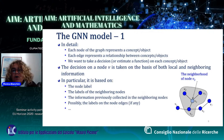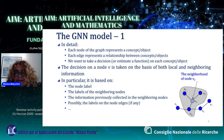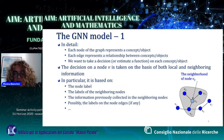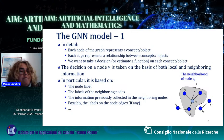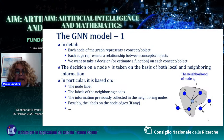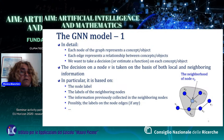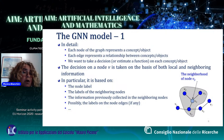At each node V, we calculate a decision function, which can be represented by its class or by a predicted value for that node. The decision on a particular node V is made on the basis of both local and neighboring information — it depends on the node label, on the labels of outgoing edges if any, on the labels of the neighboring nodes, and on the information previously collected in the neighboring nodes.